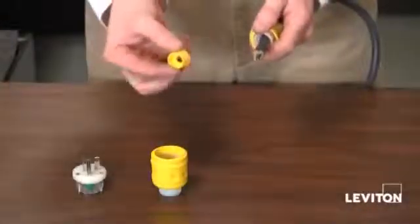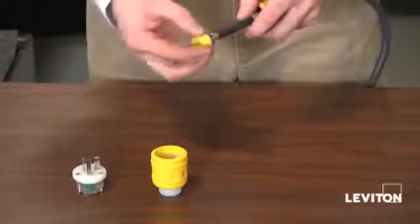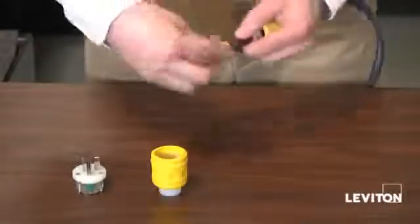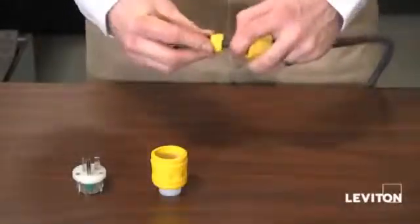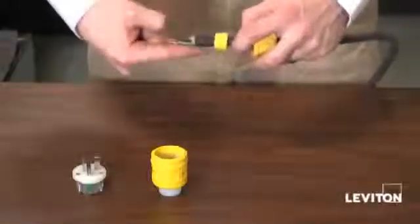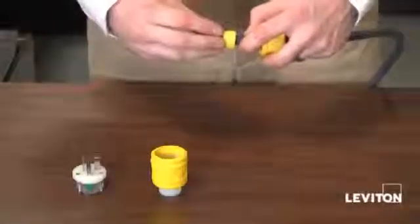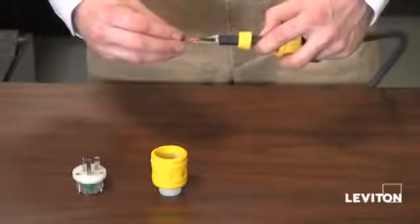Now I'm going to go ahead and put on my rubber bushing. Now you will notice that the rubber bushing, one side is smaller than the other. You want the smaller side facing towards the end of the cord.